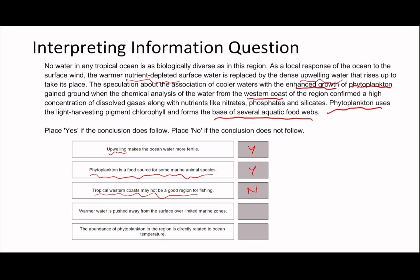Fourth statement: 'Warmer water is pushed away from the surface of a limited marine zone.' This can sometimes trick people. I remember reading something about warmer water earlier. The text says: 'As a local response of the ocean to the surface wind' — local response equals limited marine zone — 'the warmer nutrient-depleted surface water is replaced by the dense upwelling water.' So warmer water is pushed away from the surface — I would agree, because the warmer surface water is replaced. I would say this is true.